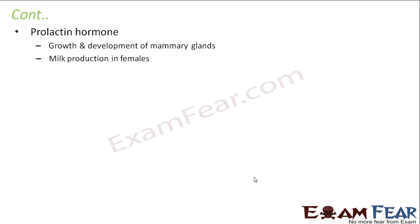Next is the prolactin hormone. This hormone helps in the growth and development of mammary glands. The word 'lactine' relates to feeding — 'lactation' refers to the period when a female gives birth and feeds her child. Lactose is the sugar present in milk. Prolactin is responsible for milk production in females.